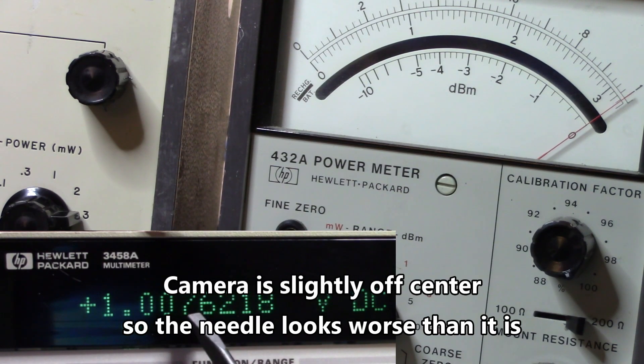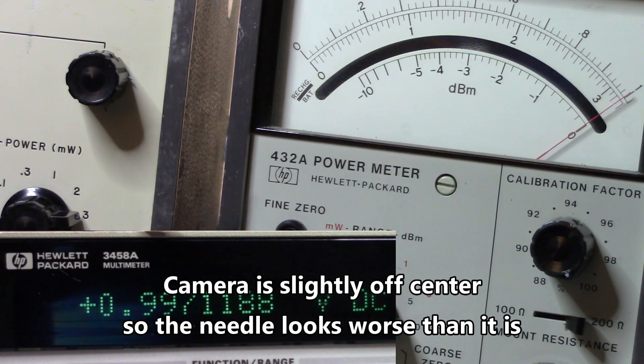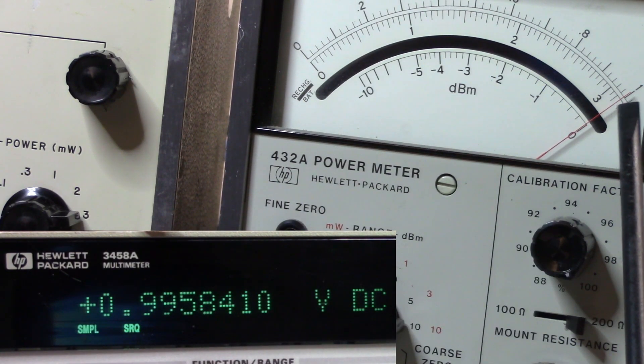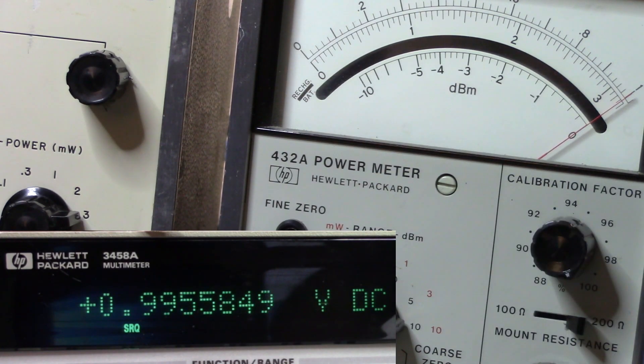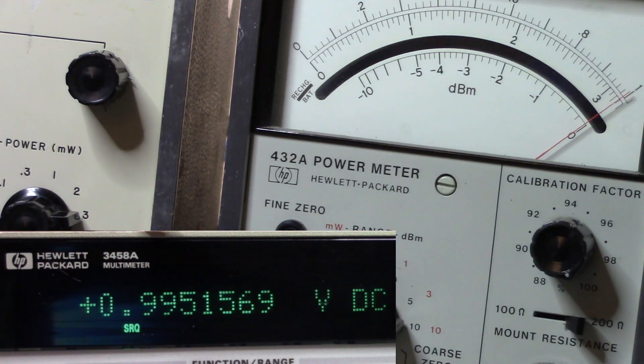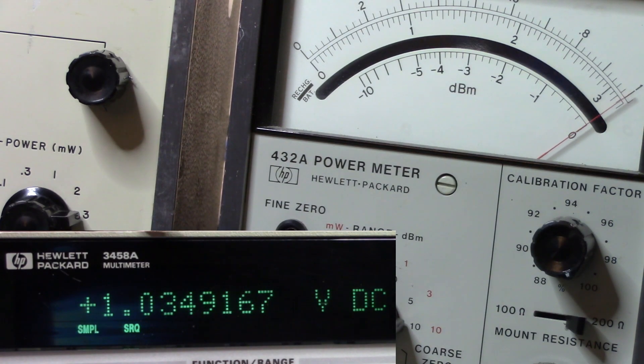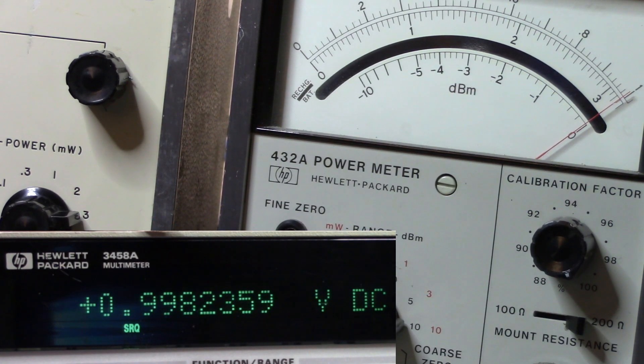As we can see here we're getting 997 millivolts, that's in range. We're supposed to be here on a one plus or minus half a deviation. I'm getting half a deviation there. So overall we'll declare that good.